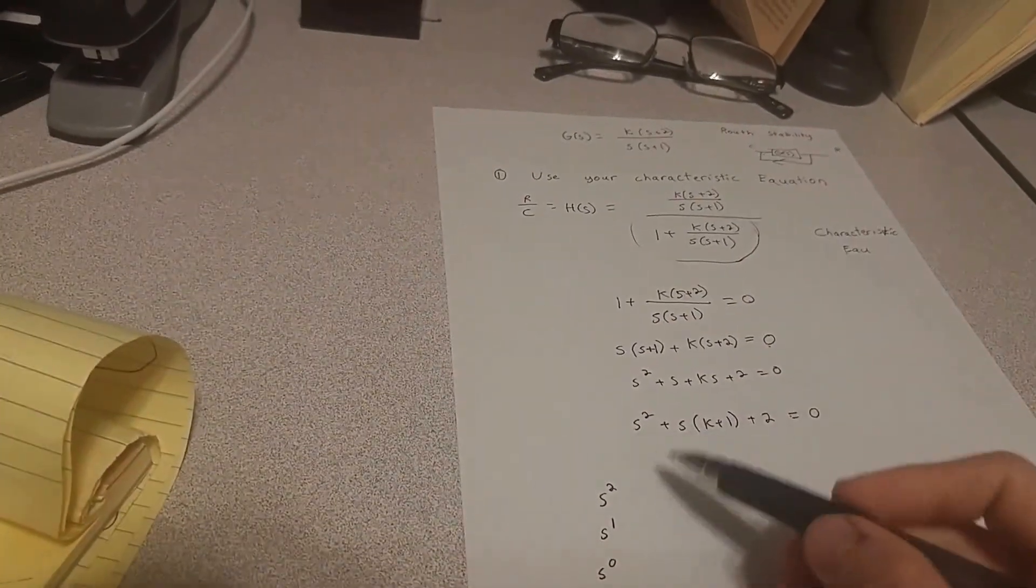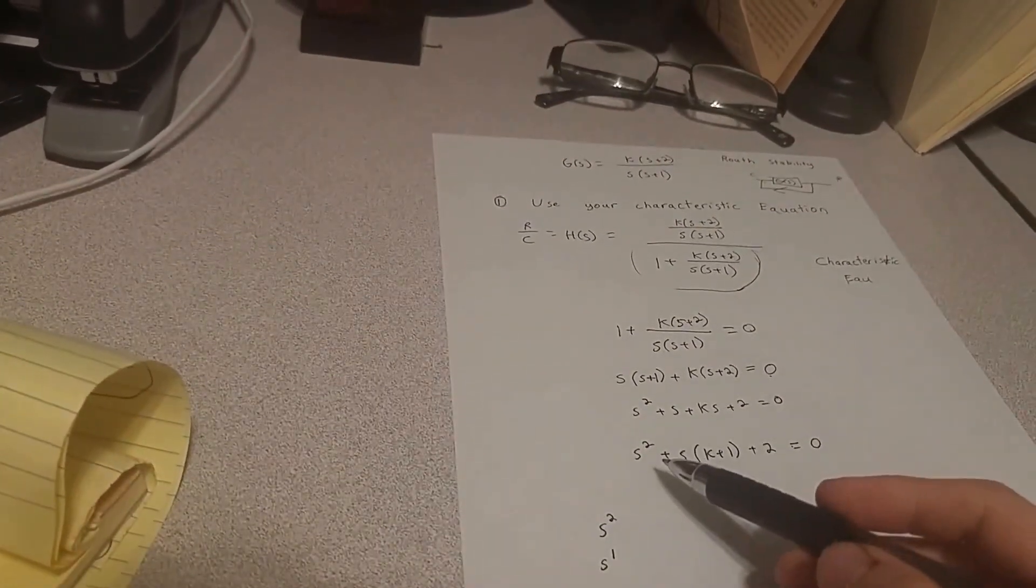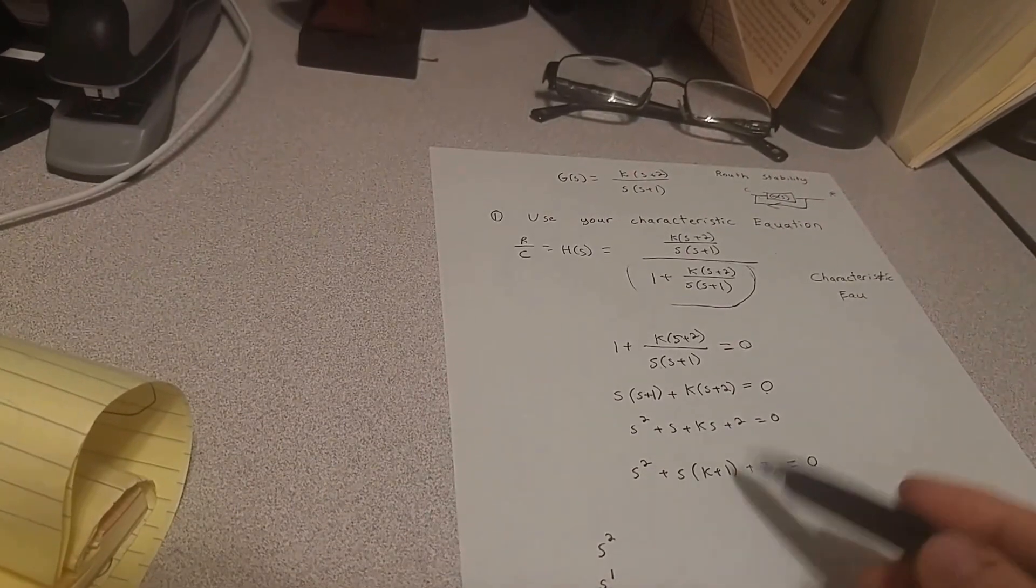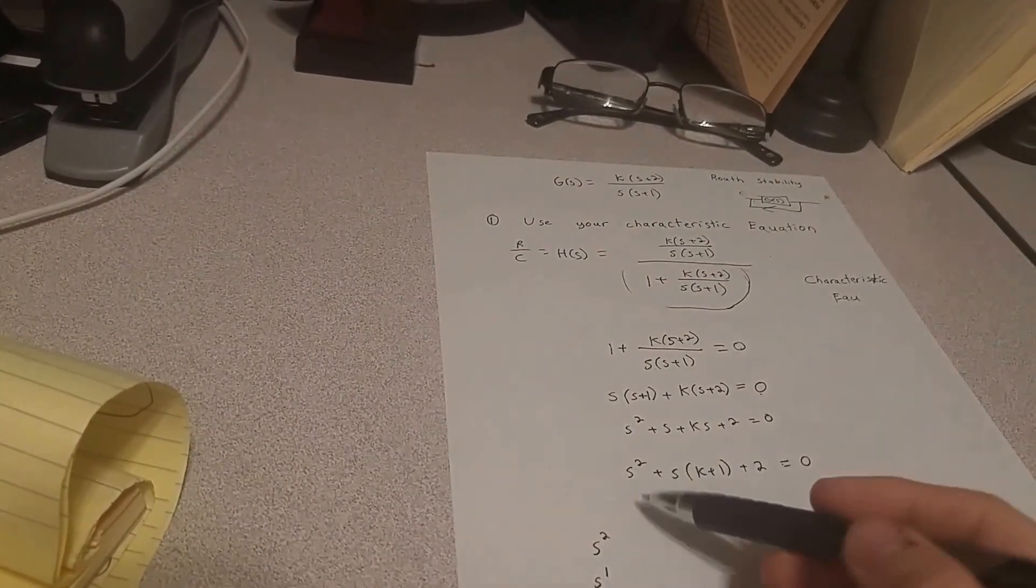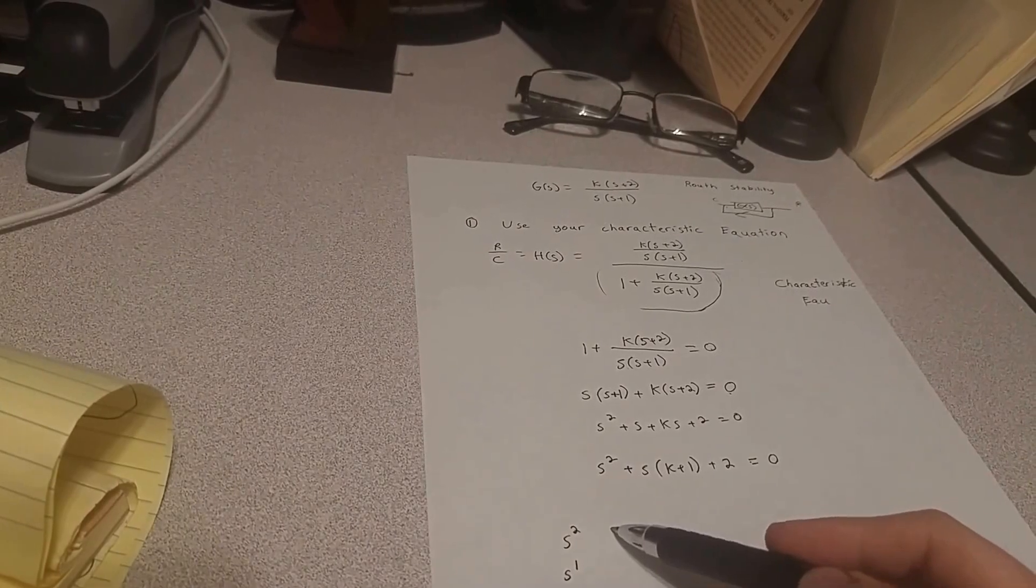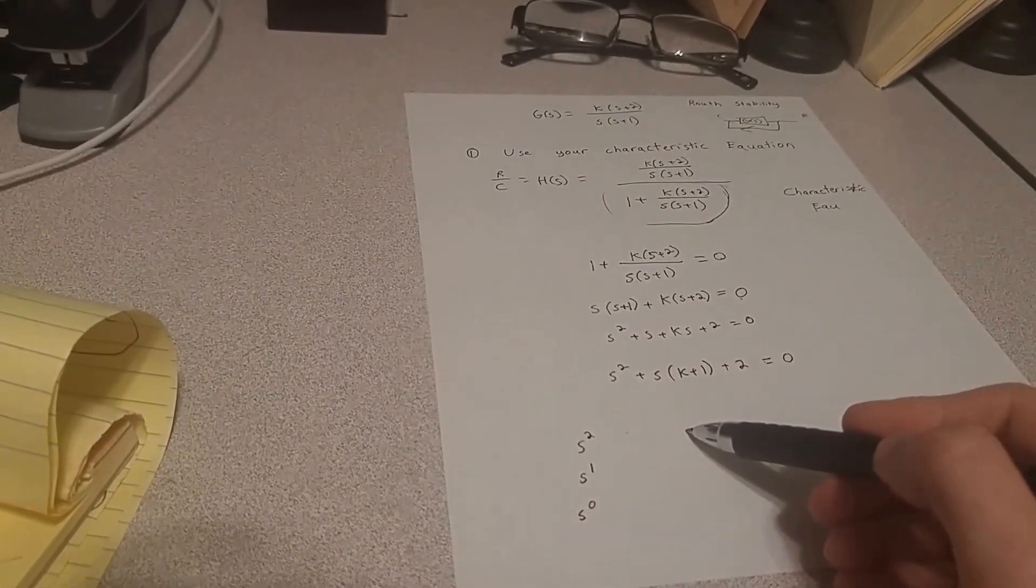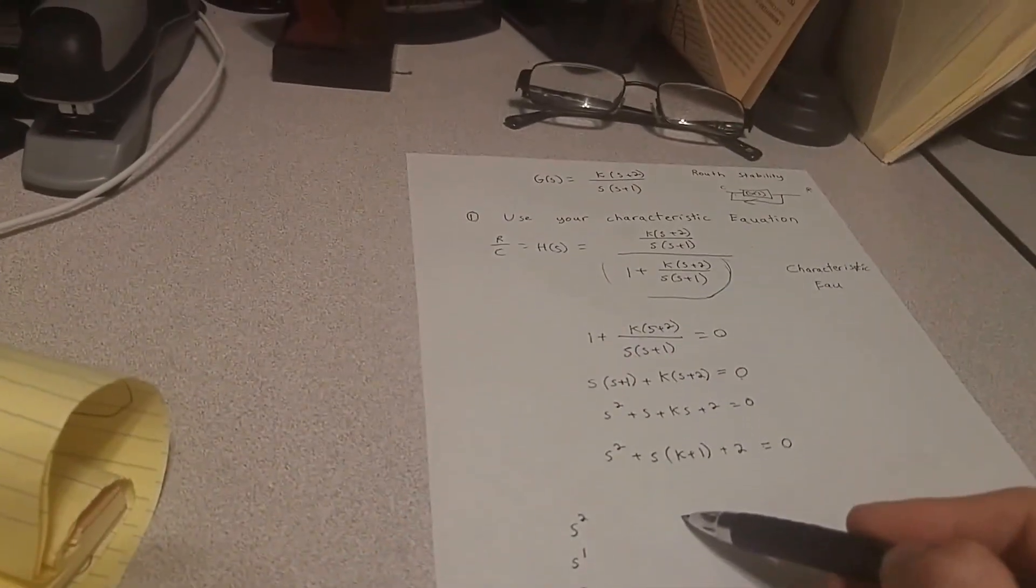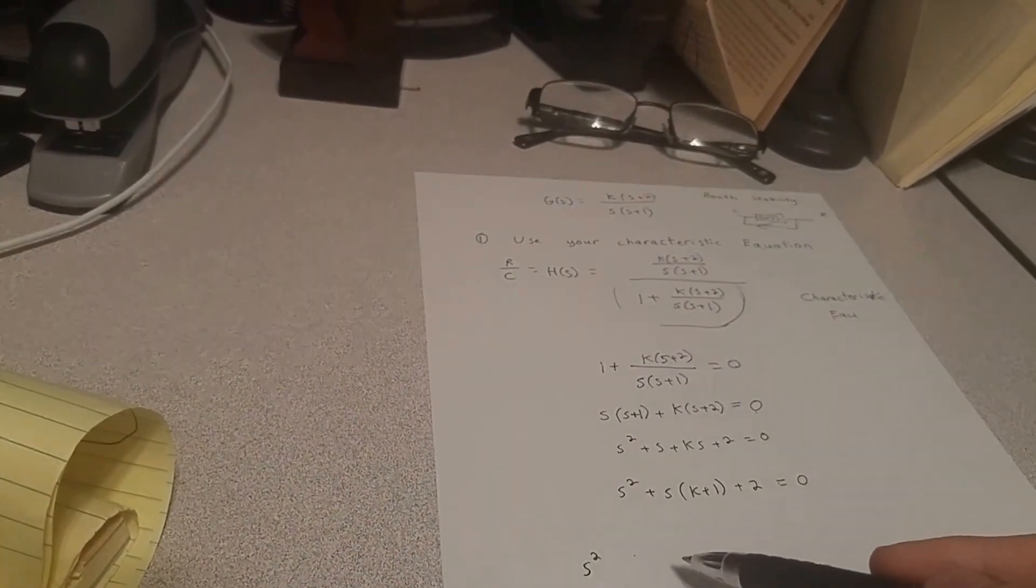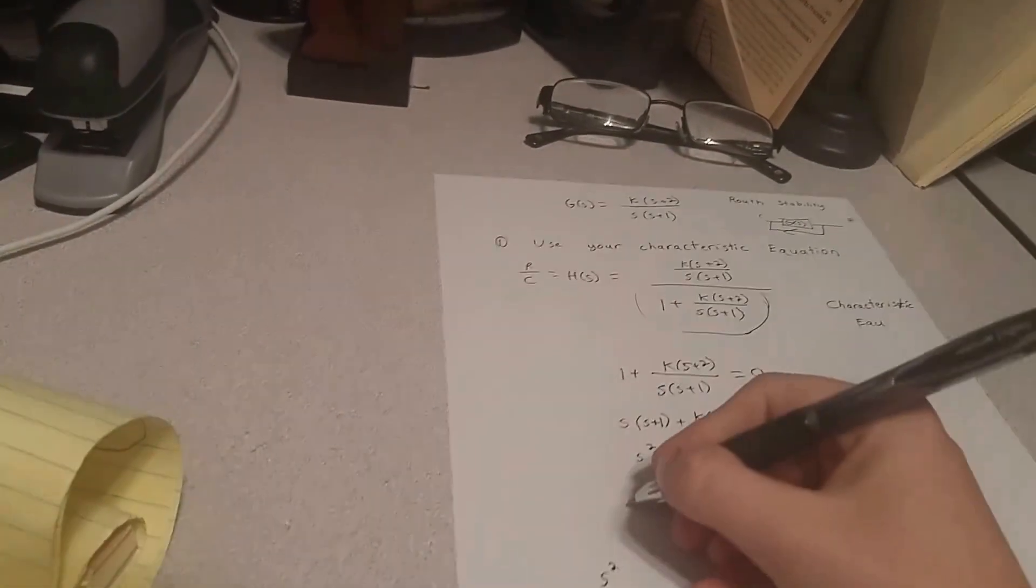And when you're putting the numbers in the chart, it basically skips over. The first value I put is going to be the s squared value, and then the second value is going to be the s to the 0 value. It's essentially a matrix. We're basically creating a reverse matrix to solve this problem.